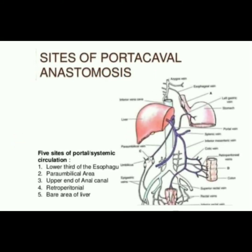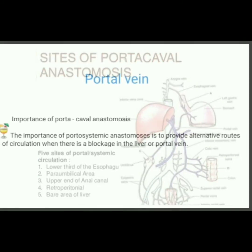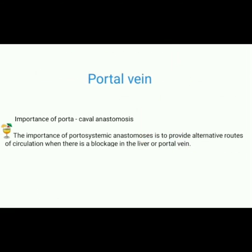Sites of portosystemic anastomosis: there are five sites. One, lower third of the esophagus; two, paraumbilical area; three, upper end of the anal canal; four, retroperitoneal; five, bare area of the liver.